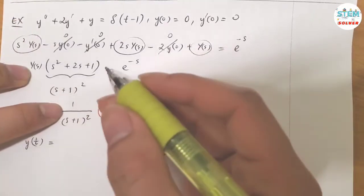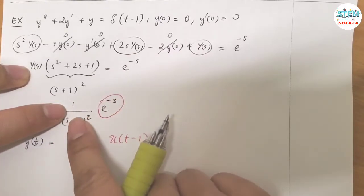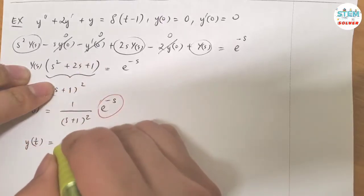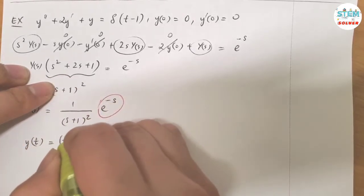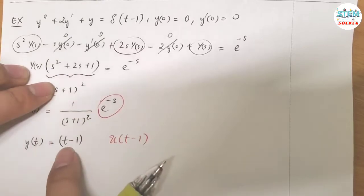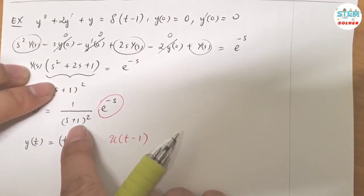For this one, you have T, right? If you ignore this, you might have, what's the L inverse of 1 over S squared, that's T. So you have T, but because you have the unit step function, the T has to match up, which means that you have T minus 1 instead of just T alone. Don't forget the shift here.